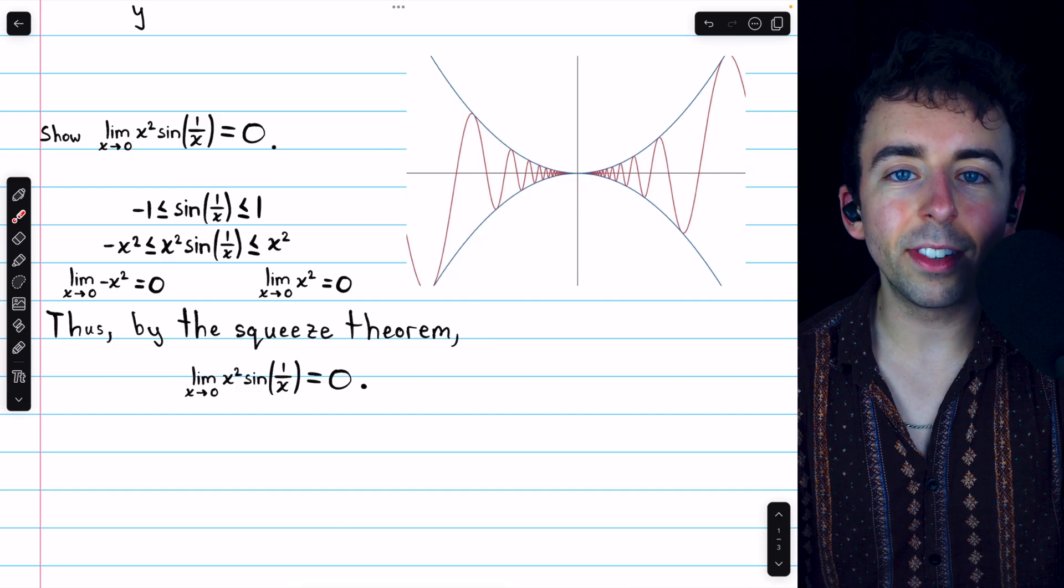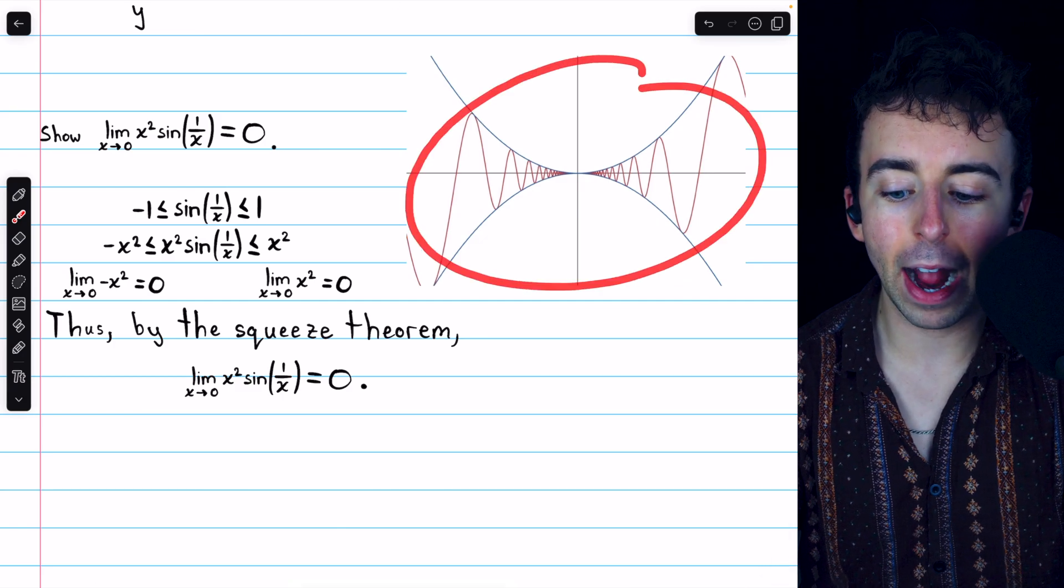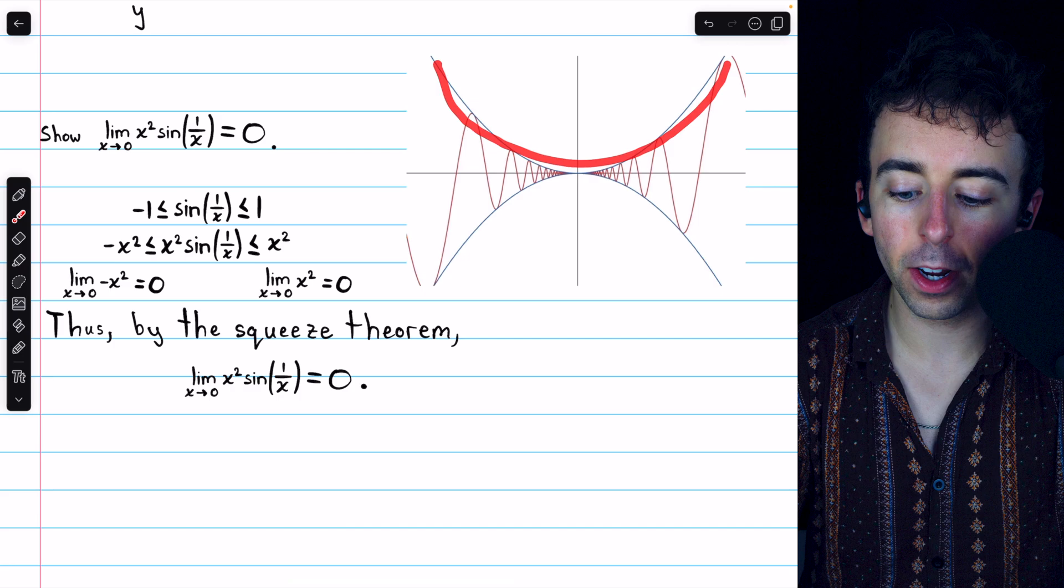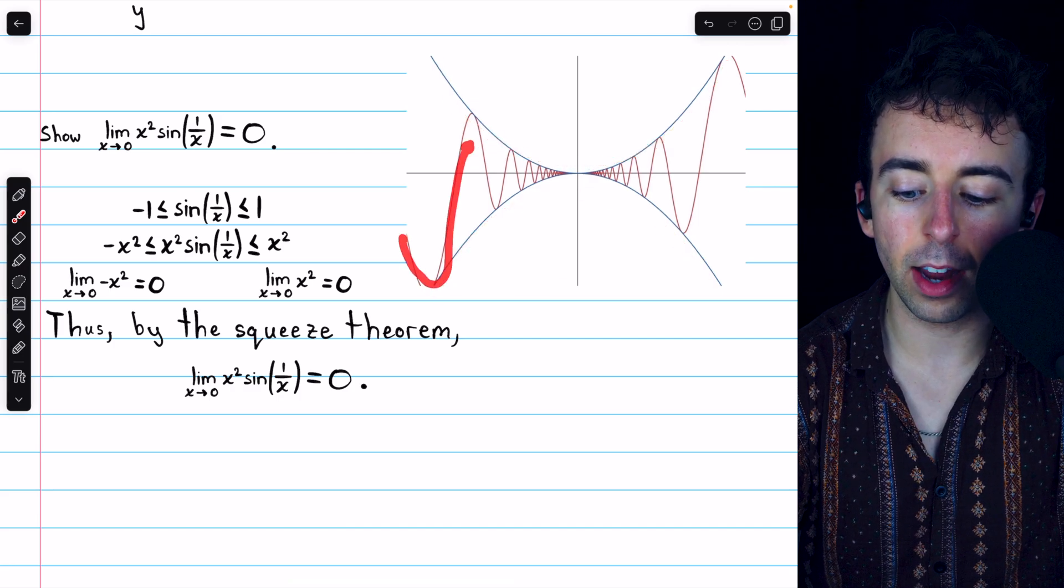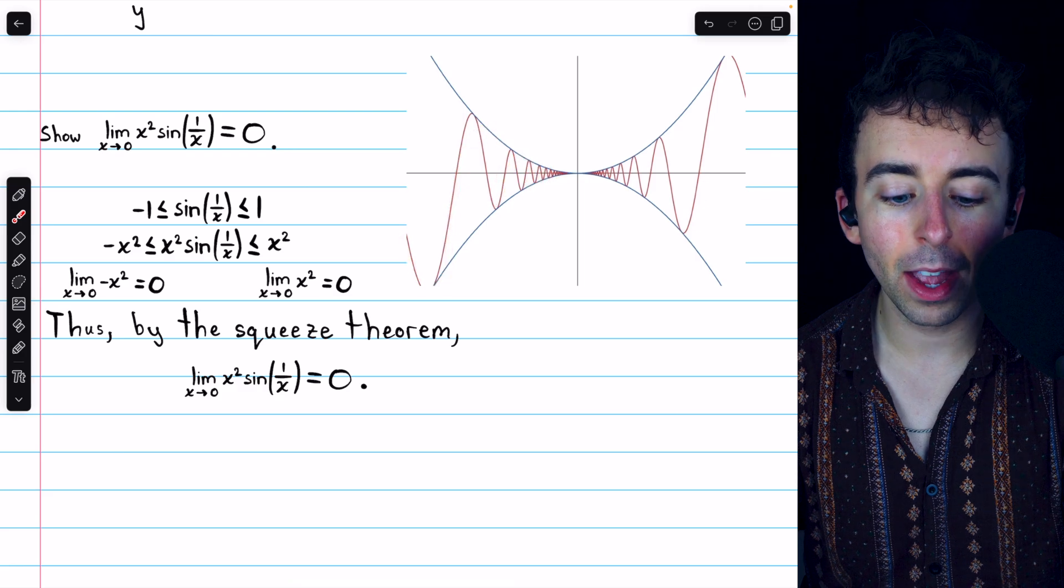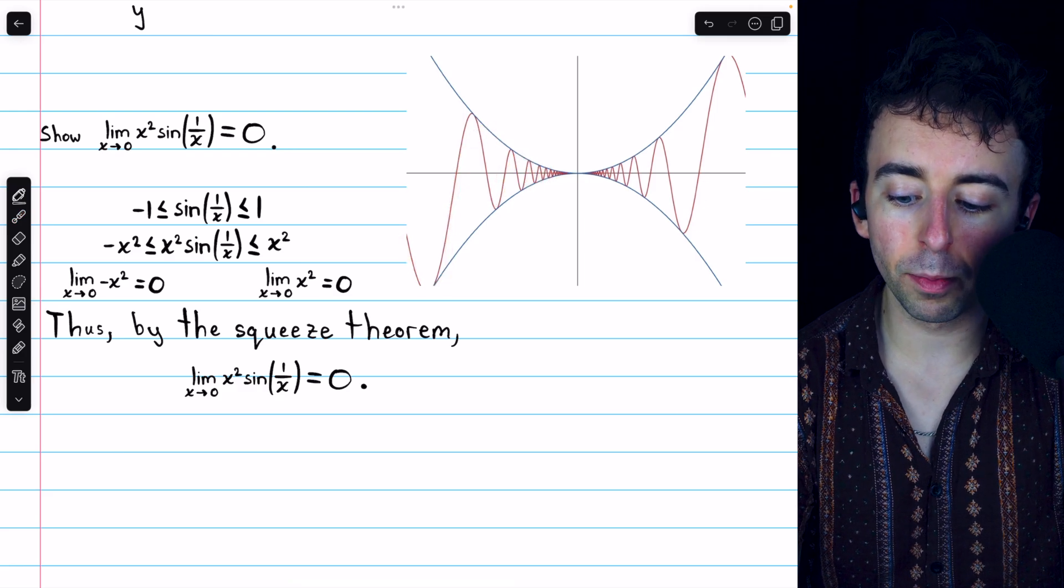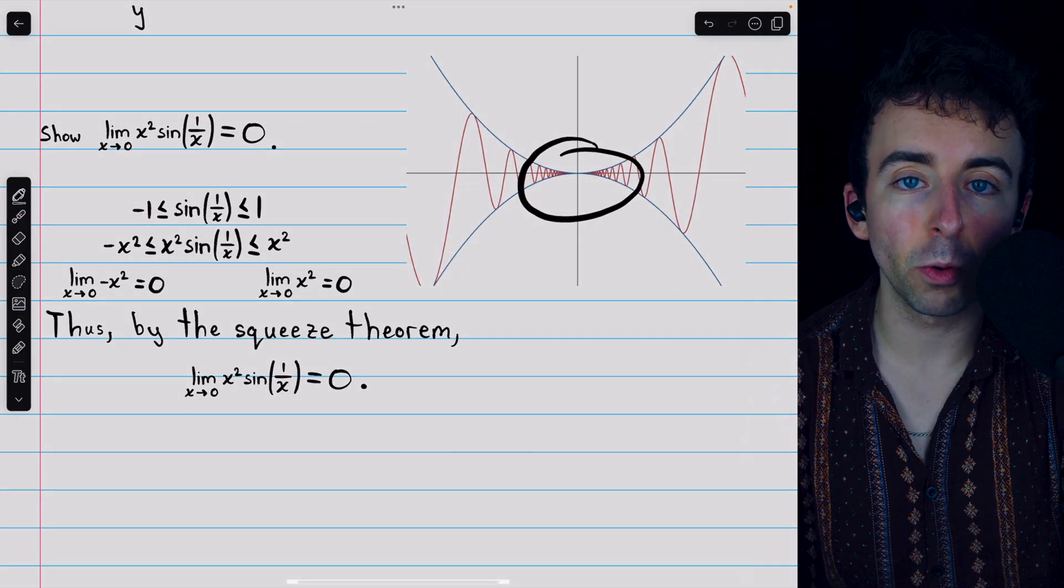We can see the squeezing behavior of the functions plainly in their graph. This is positive x squared, negative x squared, and in red, we have x squared times sine of 1 over x squeezed between them. And we see their limits are all approaching 0 as x approaches 0.